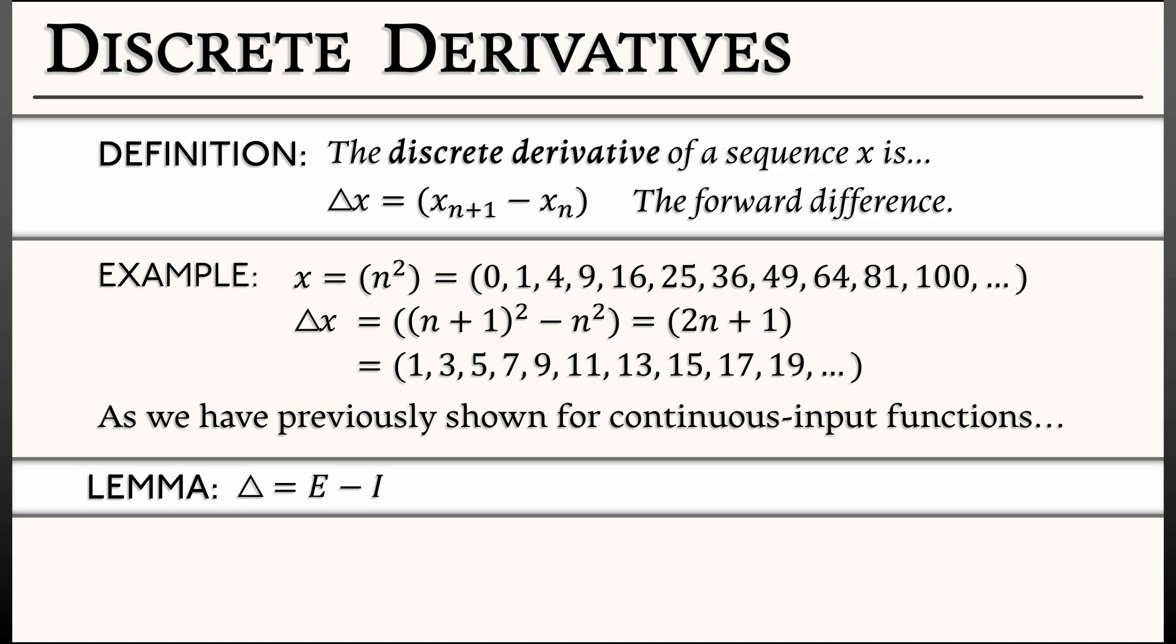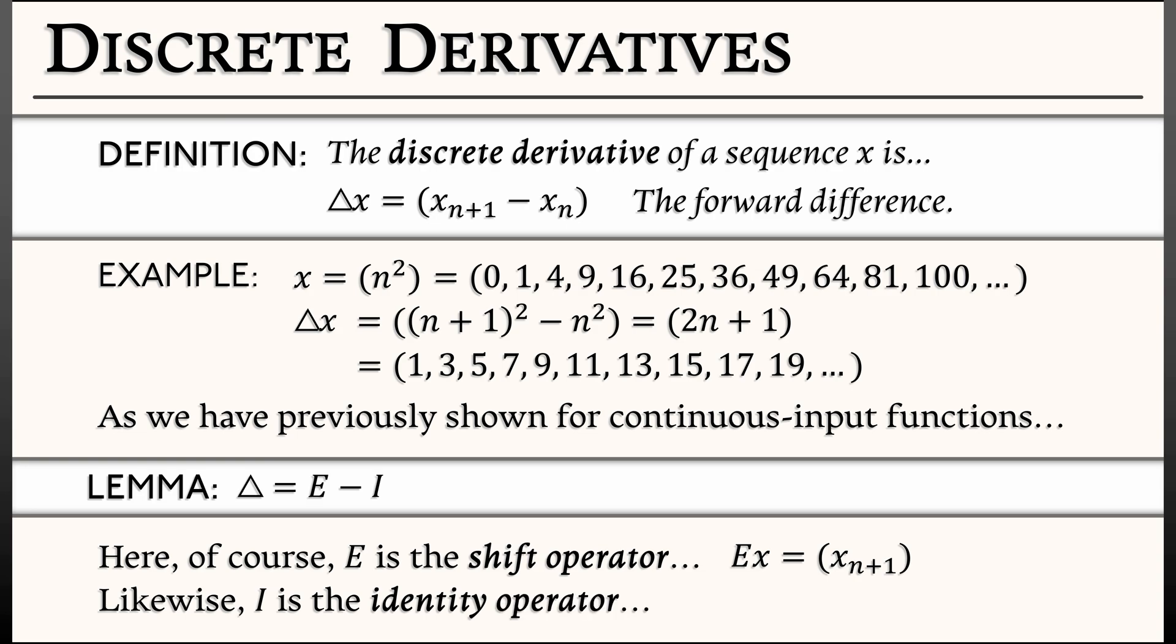Where e is the shift operator now being applied to these discrete input functions. This is the operator that shifts everything over to the left by one unit, dropping the first term. Likewise, i is the identity operator that takes a sequence and does nothing. So this is a nice relationship between some of these operators that we've seen, both in continuous and discrete calculus. But let's keep going.